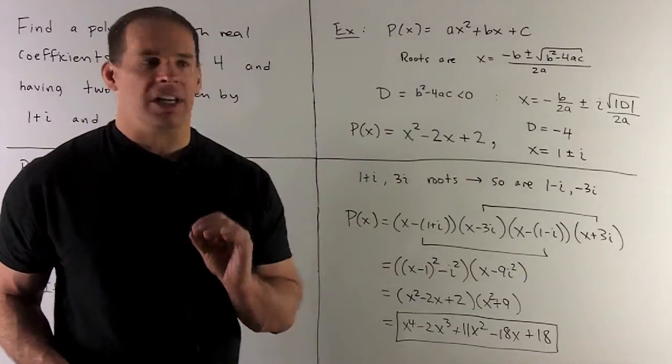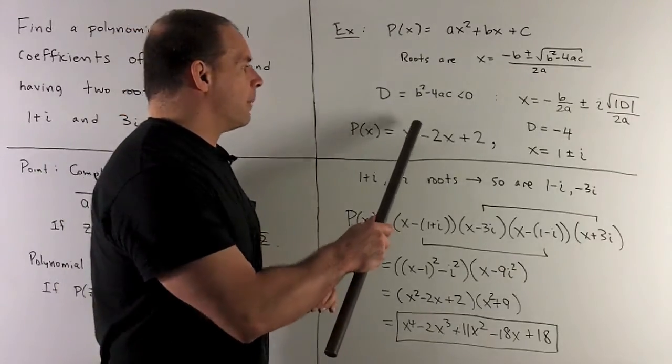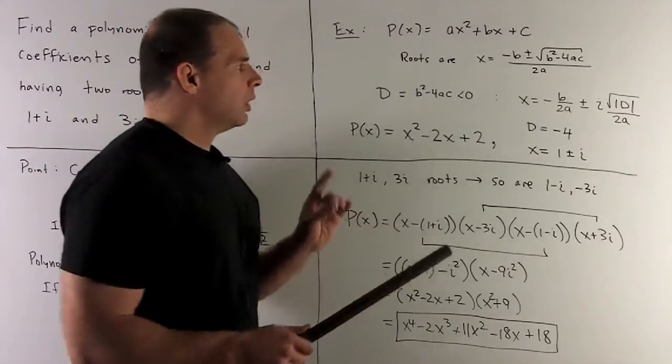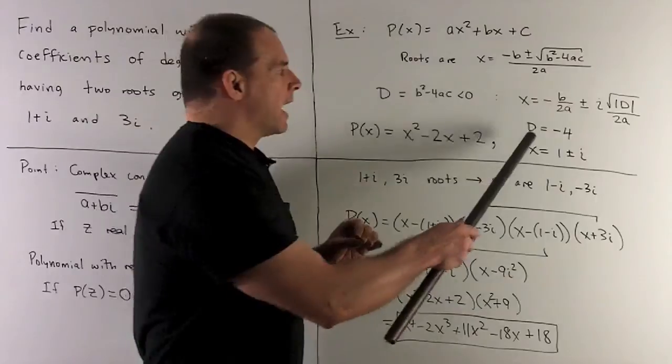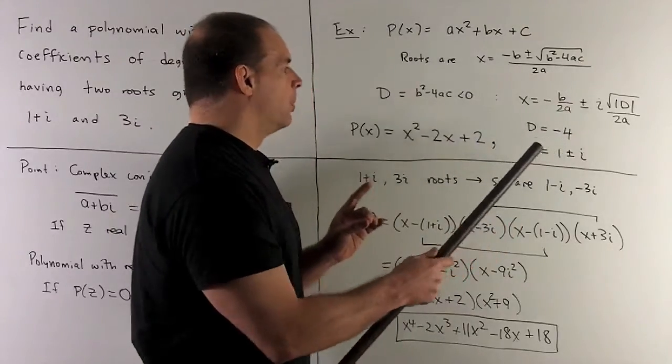Think of the concrete example. If I take x squared minus 2x plus 2, what do we have? Your d is going to be minus 4.